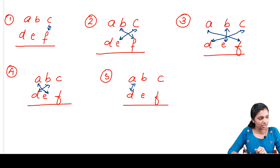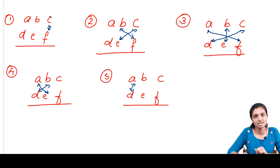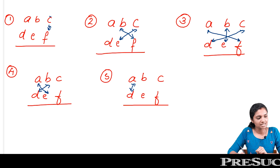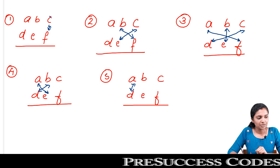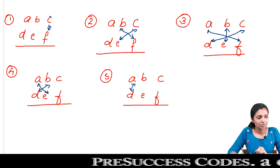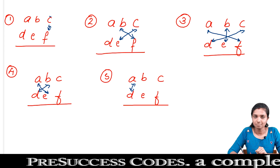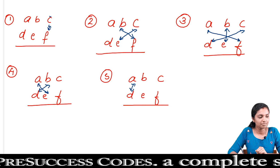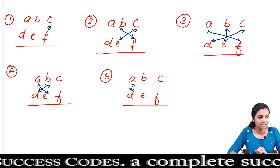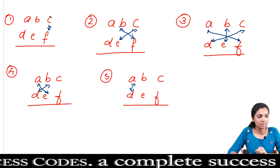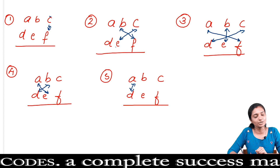The first step is to multiply the numbers in the unit place. The second step is also related to multiplying the numbers in the unit place positions.